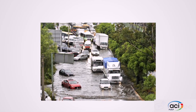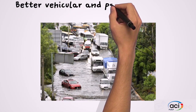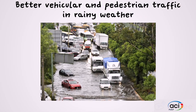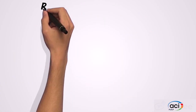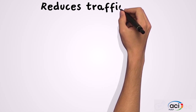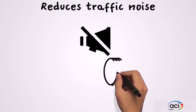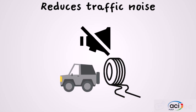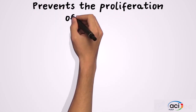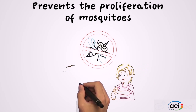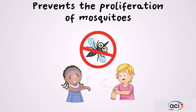Pervious concrete also has social benefits. From a safety point of view, it reduces run-off, water lodging, and flooding in urban areas, and allows better vehicular and pedestrian traffic in rainy weather. Due to its high porosity, it reduces traffic noise, particularly the noise produced by the pumping of air between the tire and the road surface. In addition, pores absorb sound through internal friction between moving air molecules and the pore walls.